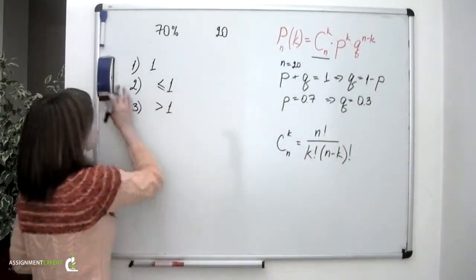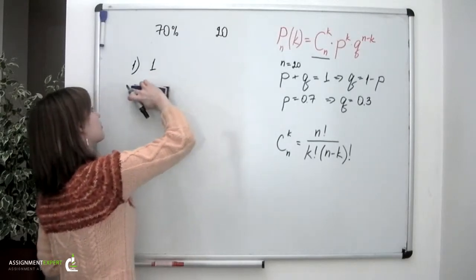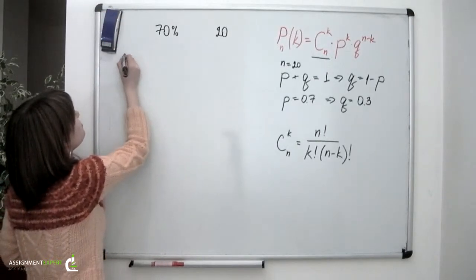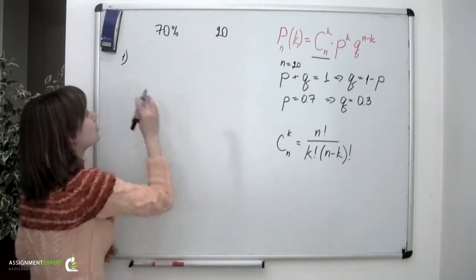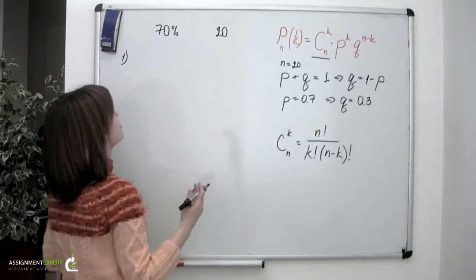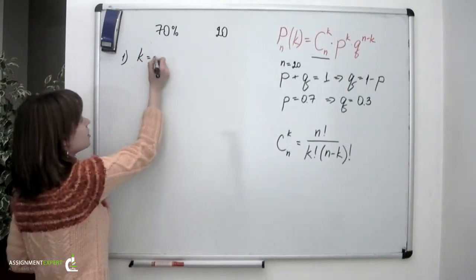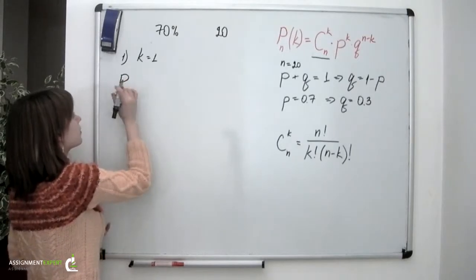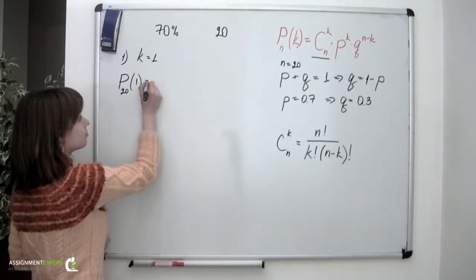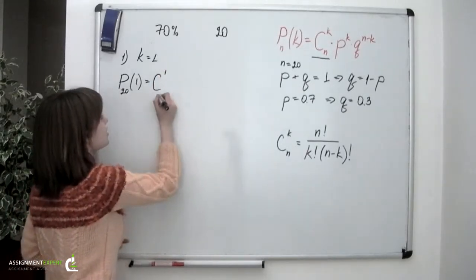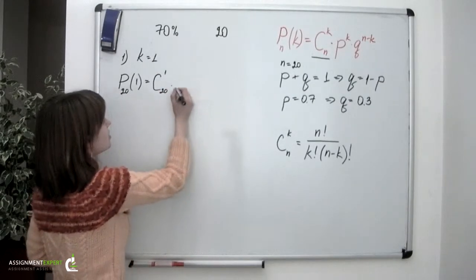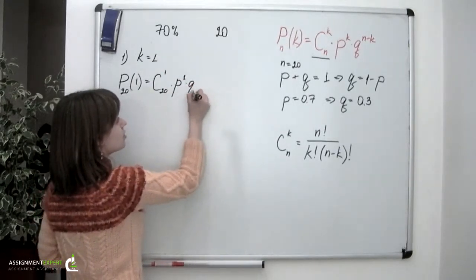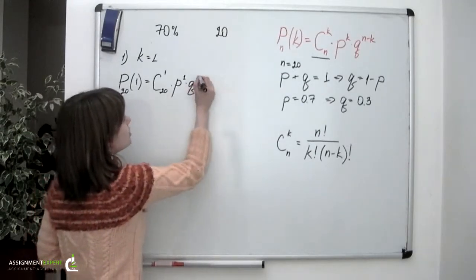Now let's move on to answering the questions. First, we were asked about the probability that only one of these 20 couples paid for their honeymoon themselves. This means the number of successes k equals 1. So the probability of 1 success out of 20 trials equals the combination of 1 success out of 20 trials, times p to the first power, times q to the power of 20 minus 1.